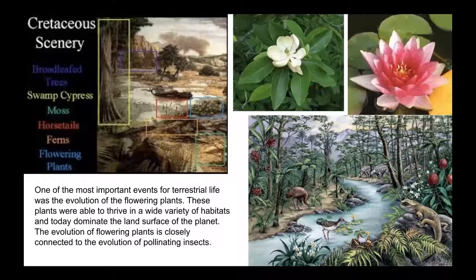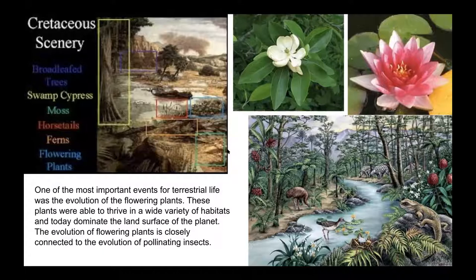One of the most important events for terrestrial life is the evolution of flowering plants — this is when plants began to have flowers. Before this, plants were ferns, conifers, cycads, and others, but there were no flowers. These new plants were able to thrive in a wide variety of habitats and today dominate the land surface of the planet. These flowering plants are also connected to the evolution of many insects, particularly the ones that pollinate the plants and use nectar for food.